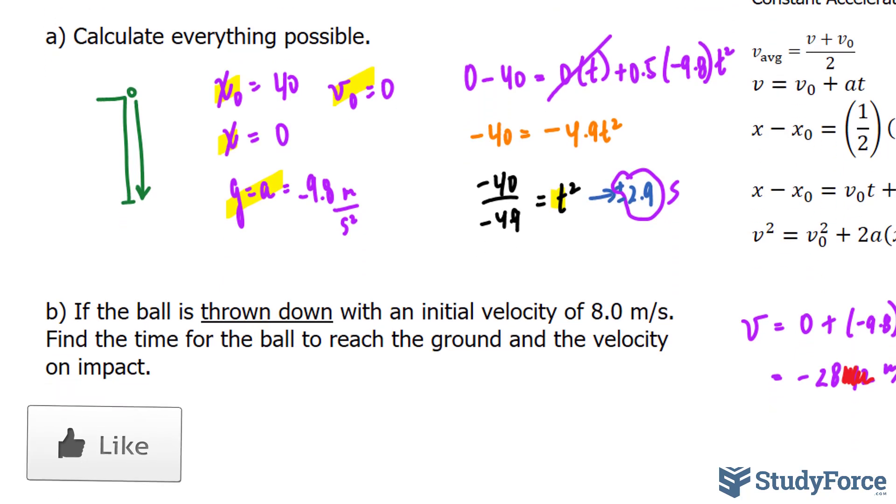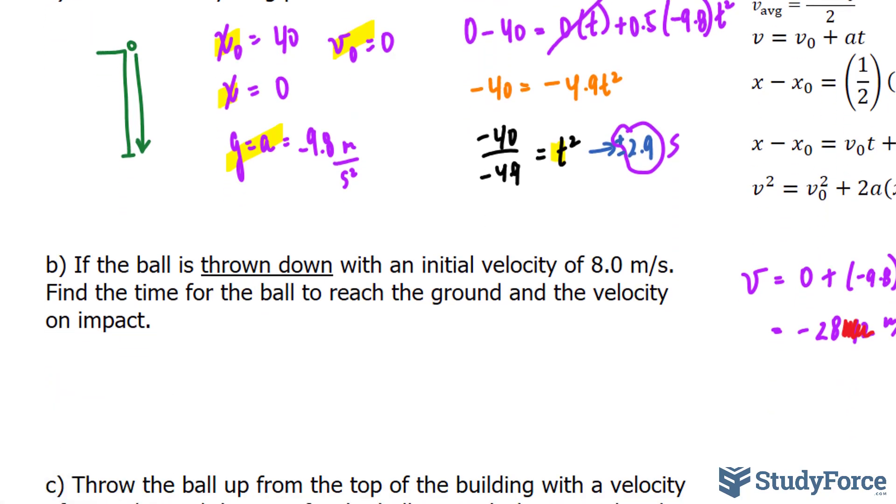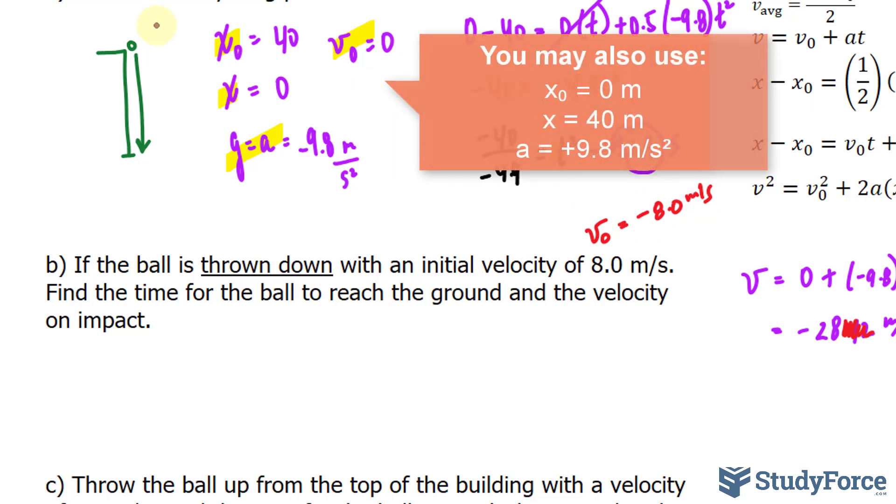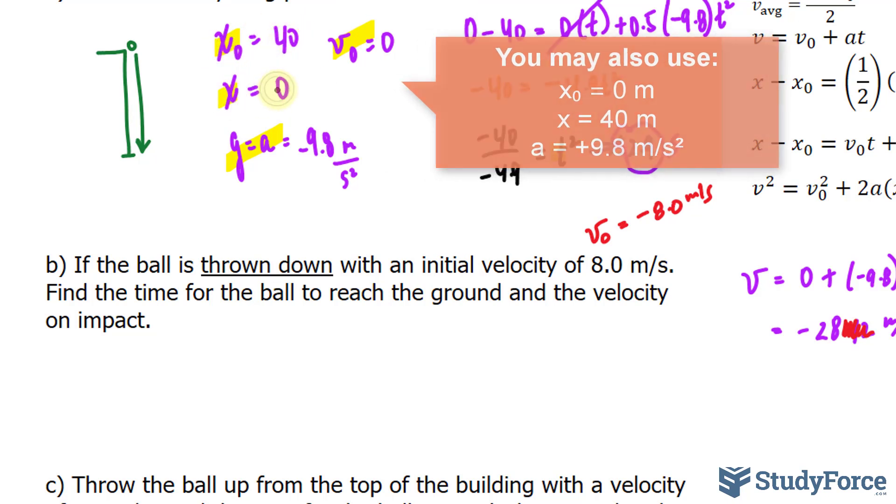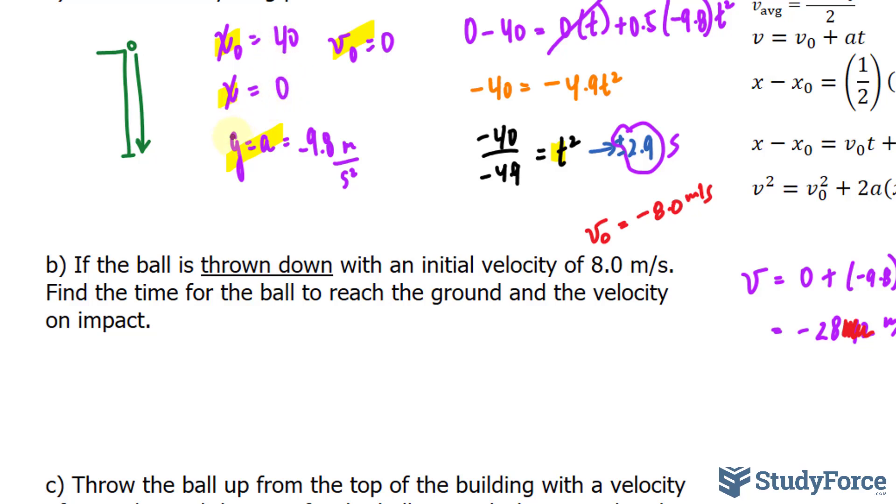If the ball is thrown down with an initial velocity of 8.0 meters per second, so this time our initial velocity is negative 8.0 meters per second, I put this negative because the ball is going downwards, but you could have left it as positive just as long as you made the initial value as 0 and the final value as 40 as opposed to this way, and change the acceleration to positive 9.8. But since I'm taking into account direction, I made this negative.